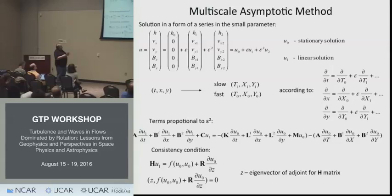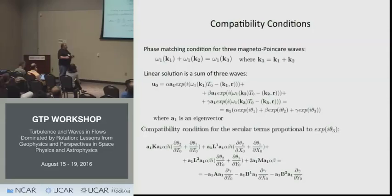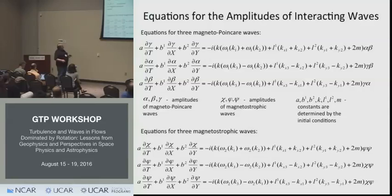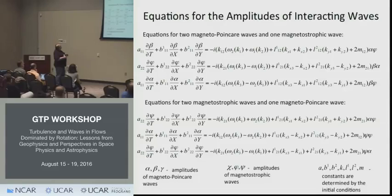You need two timescales — small time and fast time — and two different space scales. Using these compatibility conditions, which can be done simply in mathematics, you find four sets of equations for the amplitudes of interacting waves: equations for magneto-Poincaré wave interactions, equations for three magnetostrophic wave interactions, equations for two magneto-Poincaré and one magnetostrophic wave, and equations for two magnetostrophic and one magneto-Poincaré wave.